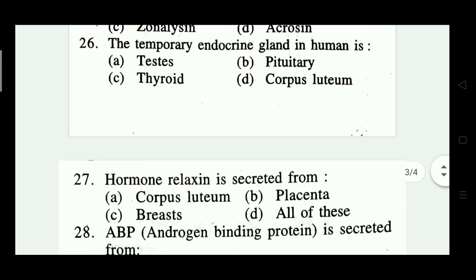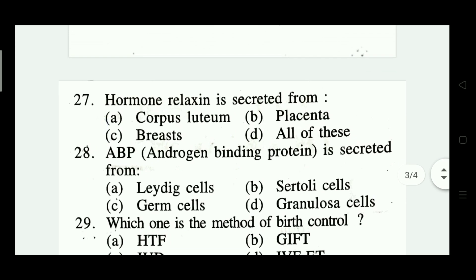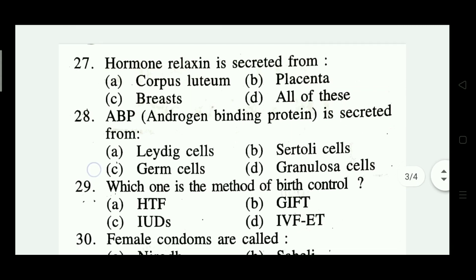Question number twenty-seven: hormone relaxin is secreted from — corpus luteum, placenta, breast, all of these. The answer is option D — all of these.